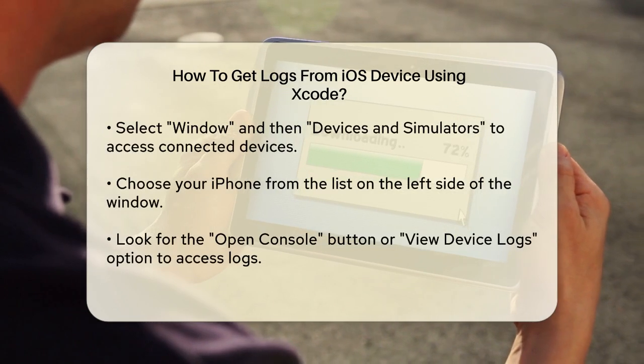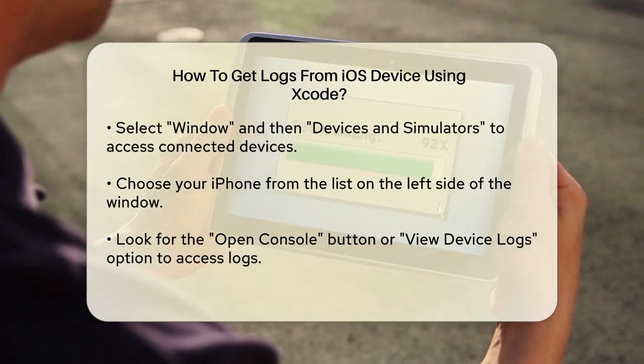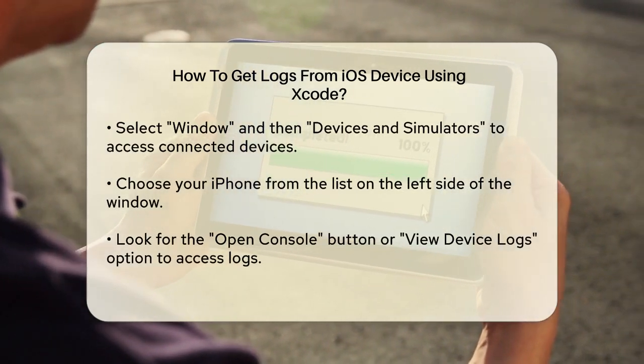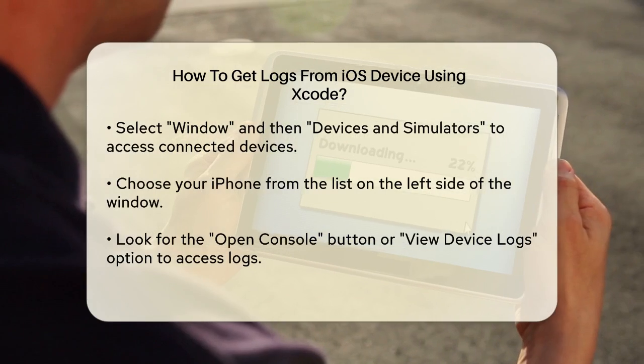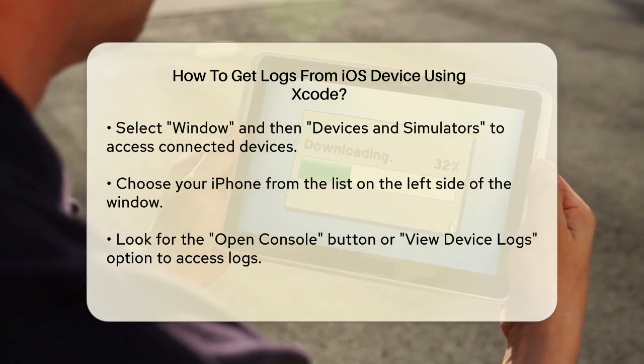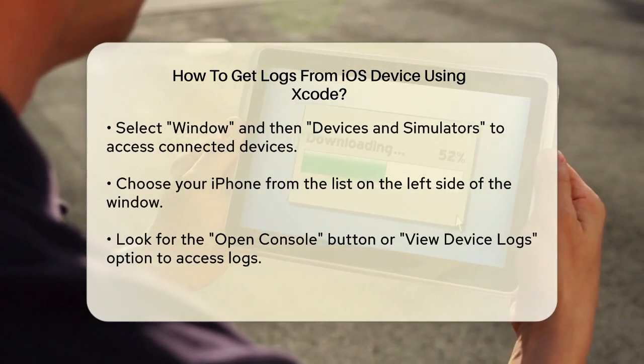In this window, select your iPhone from the list on the left side. You'll see a few options here, but what you're looking for is the Open Console button or the View Device Logs option.